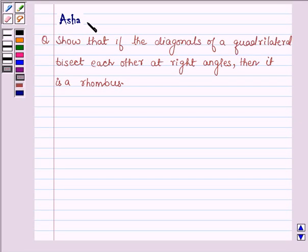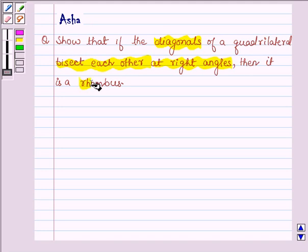Hello and welcome to the session. I am Arsha and I am going to help you with the following question which says show that if the diagonals of a quadrilateral bisect each other at right angles then it is a rhombus.